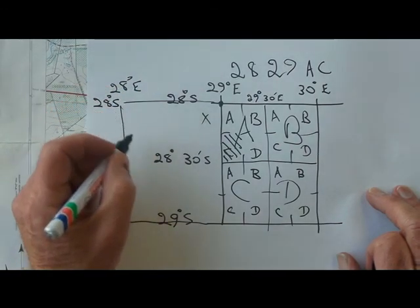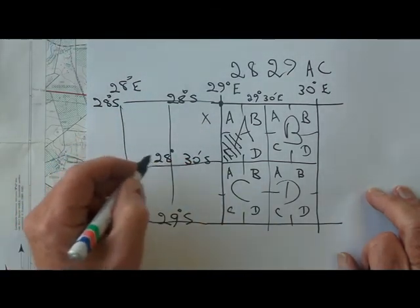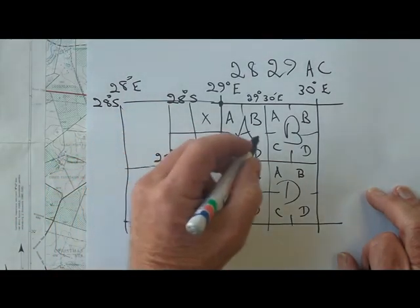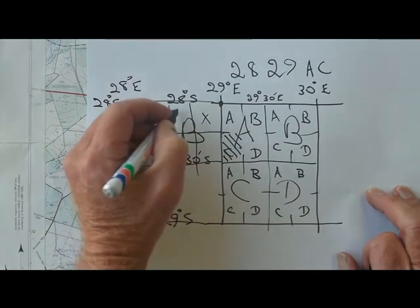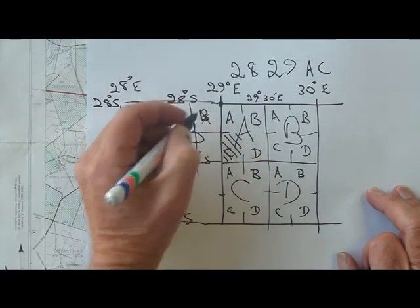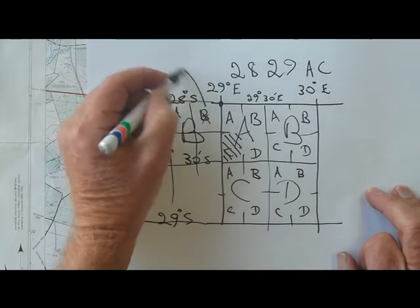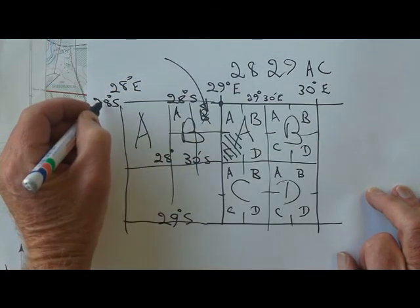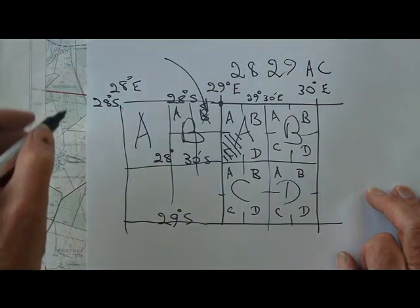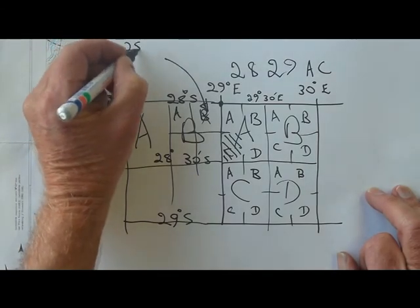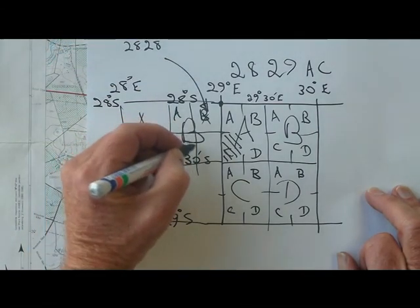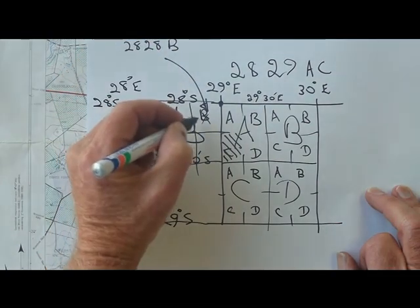This one stays at 28, so this would now be 28 east, 28 south. And over here, we would have A, B, A, B. So this one here would be 2828BB.